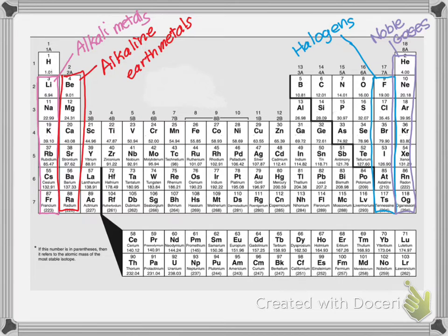A student once told me that she had memorized all four names and felt confident, but struggled placing them in the correct column. She realized that going from left to right on the periodic table they are in alphabetical order: alkali, then alkaline — and A-L-K-A-L-I comes before A-L-K-A-L-I-N-E. Then H for halogens comes after A's, and N for noble gases comes last. That alphabetical trick helped her not mix up where each group is located.